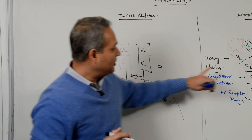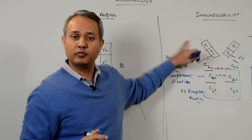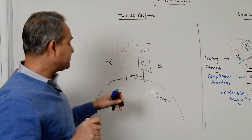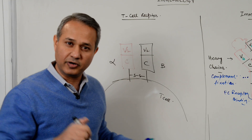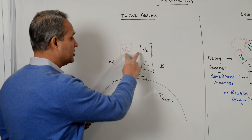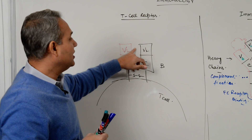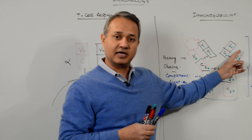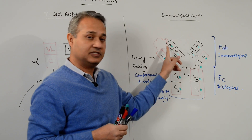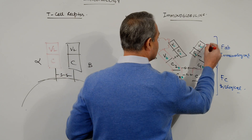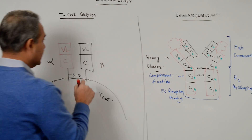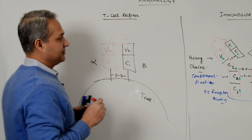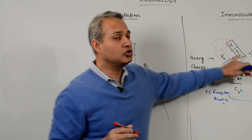This is interesting — if you pick up the FAB area of an immunoglobulin and stick it into a T cell, it becomes a T cell receptor. Now, an important point: the immunoglobulin has two antigen binding sites, one on each side. But the T cell receptor, being only the FAB portion, has only one antigen binding site.